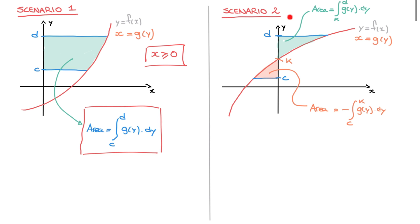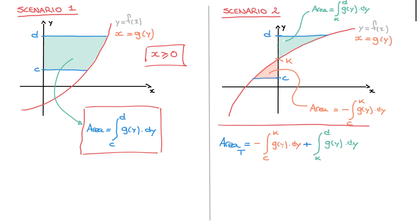In summary, for Scenario 2, the total enclosed area — which I'll write as area subscript t for total — equals to the orange area plus the green area. That is: the opposite of the definite integral from c to k of g of y, plus the definite integral from k to d of g of y.